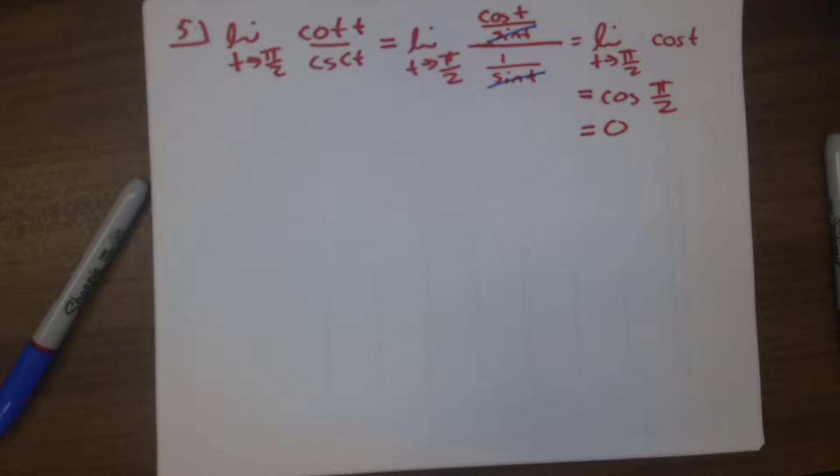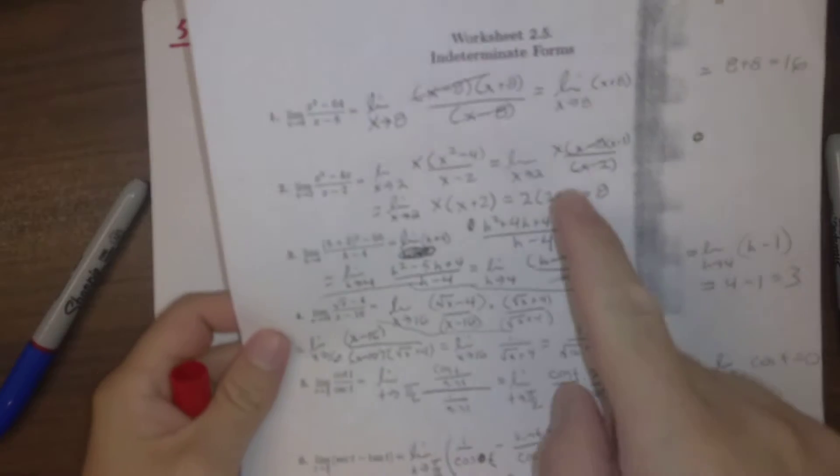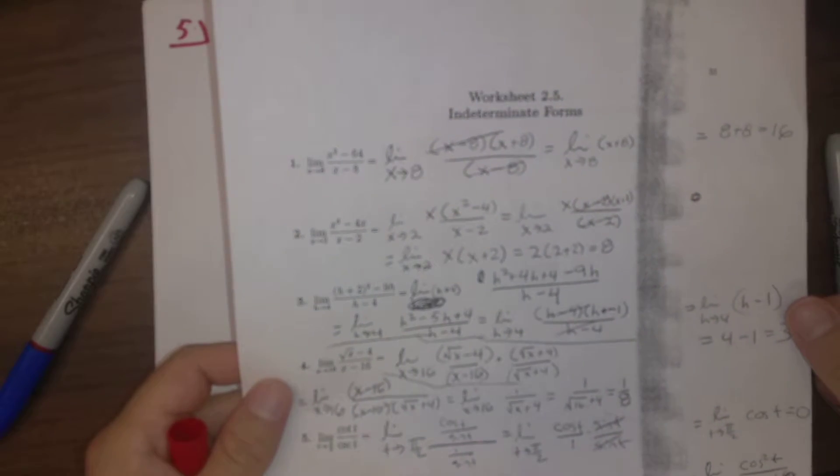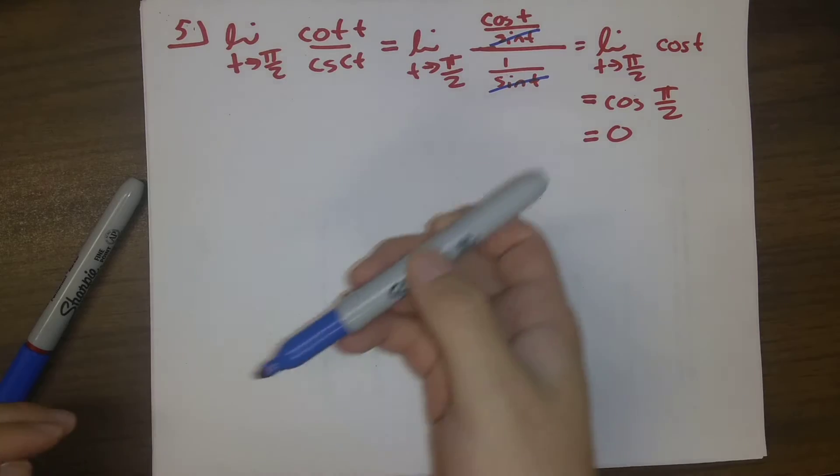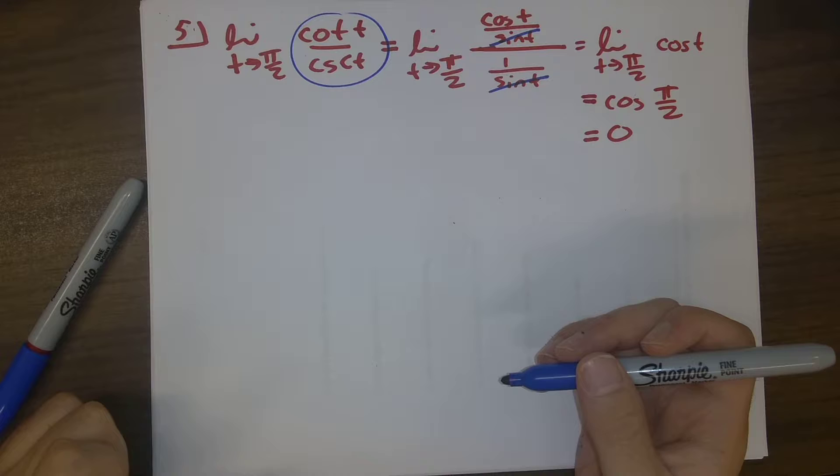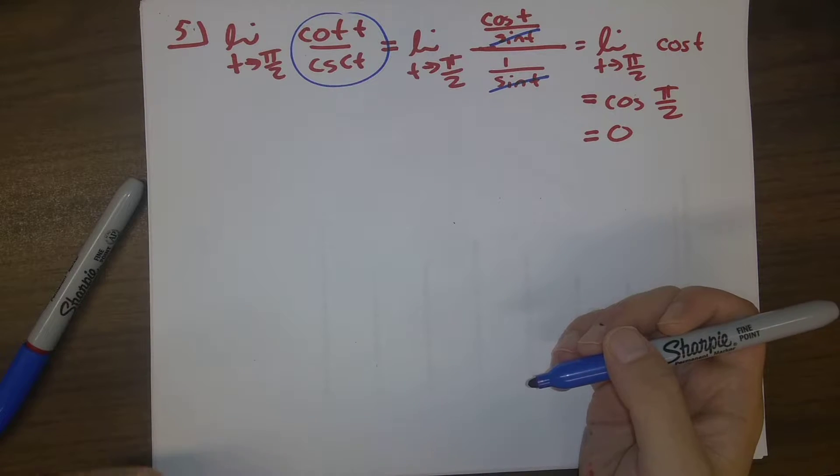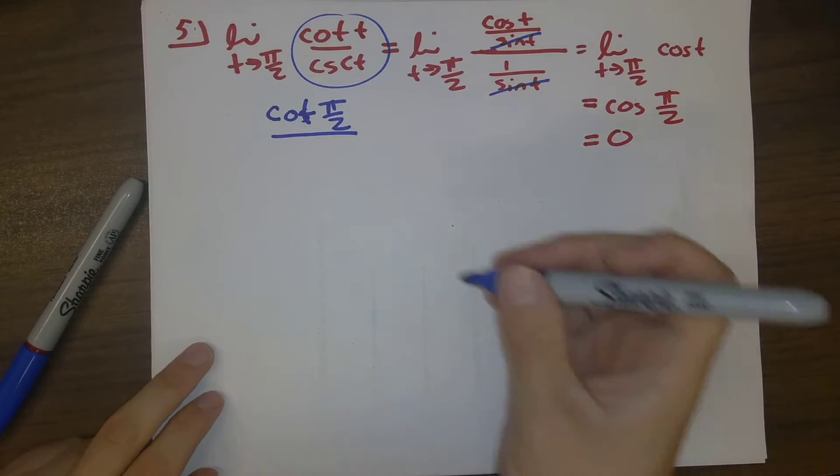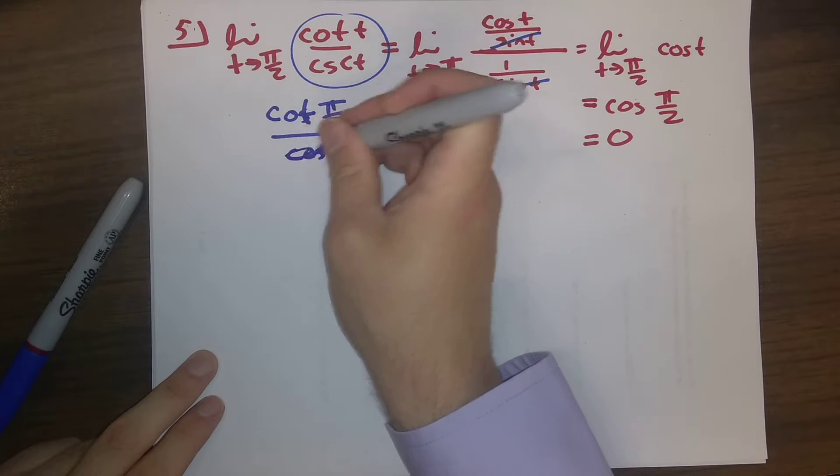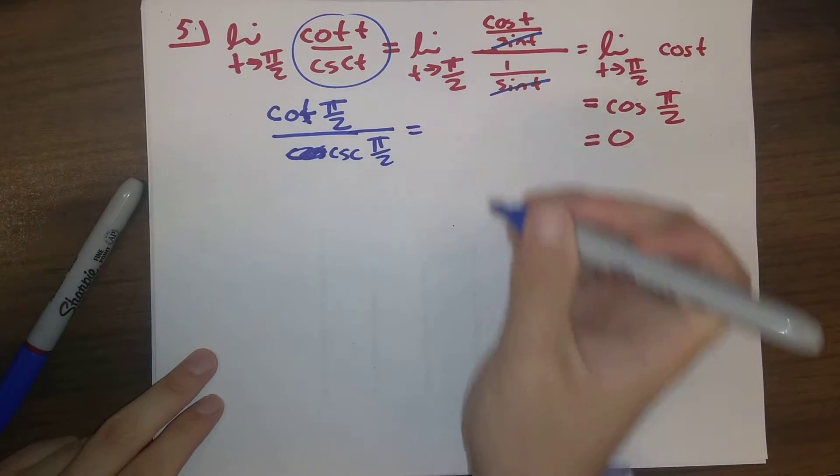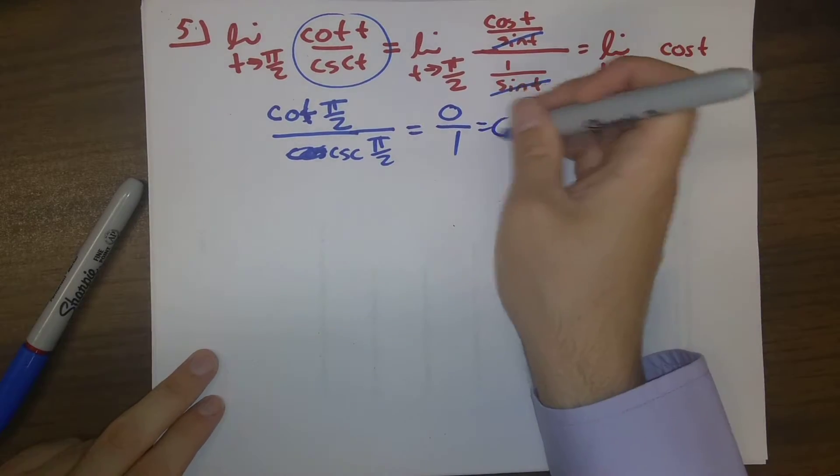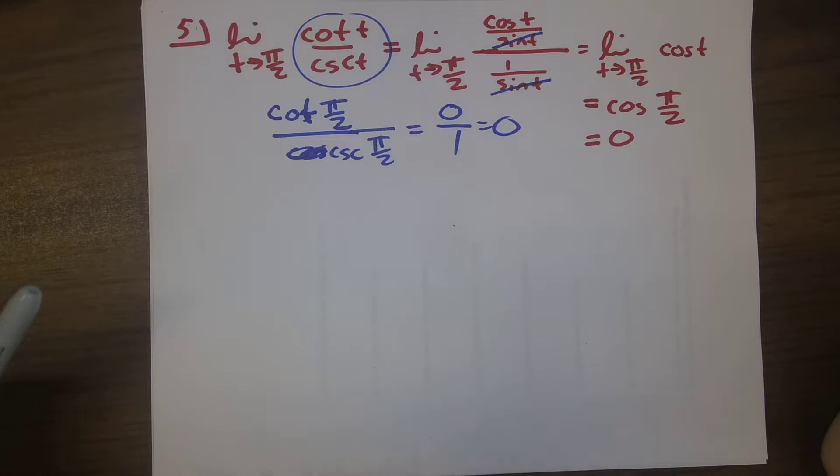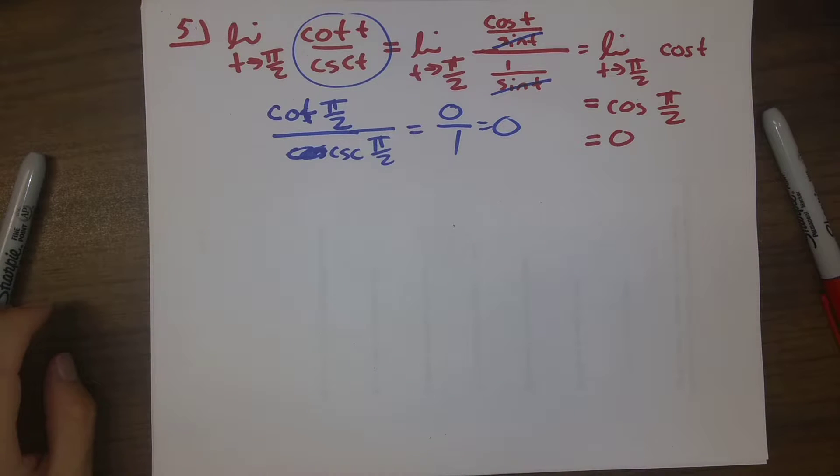However, it is worth noting that in some sense, in retrospect, if we're careful, we might wonder what this problem was doing on the indeterminate forms worksheet in the first place. If we simply had gone back to cotangent of t over cosecant t and plugged in pi over two, we would have cotangent of pi over two over cosecant of pi over two, and this actually just ends up being zero over one, which is zero. So actually, we didn't have to use the algebraic manipulation. This actually wasn't an indeterminate form.